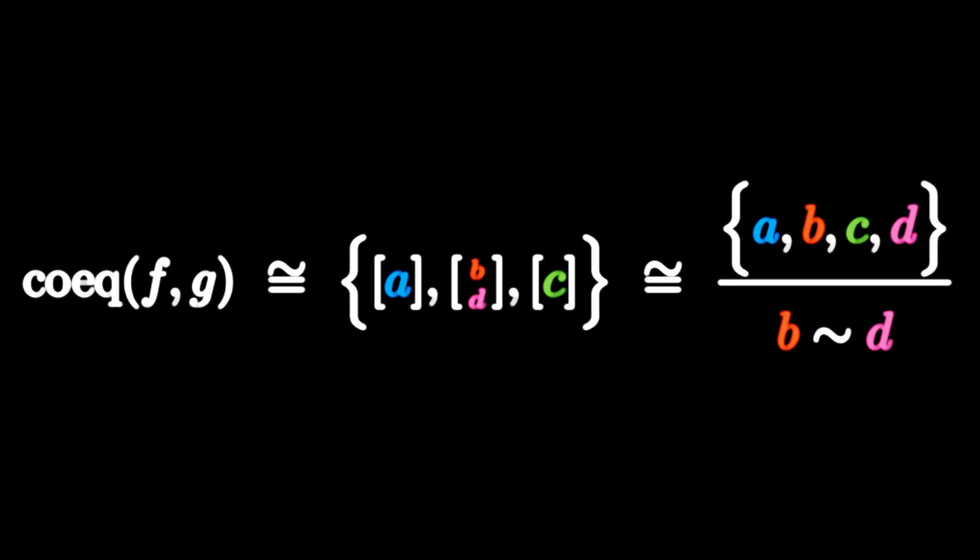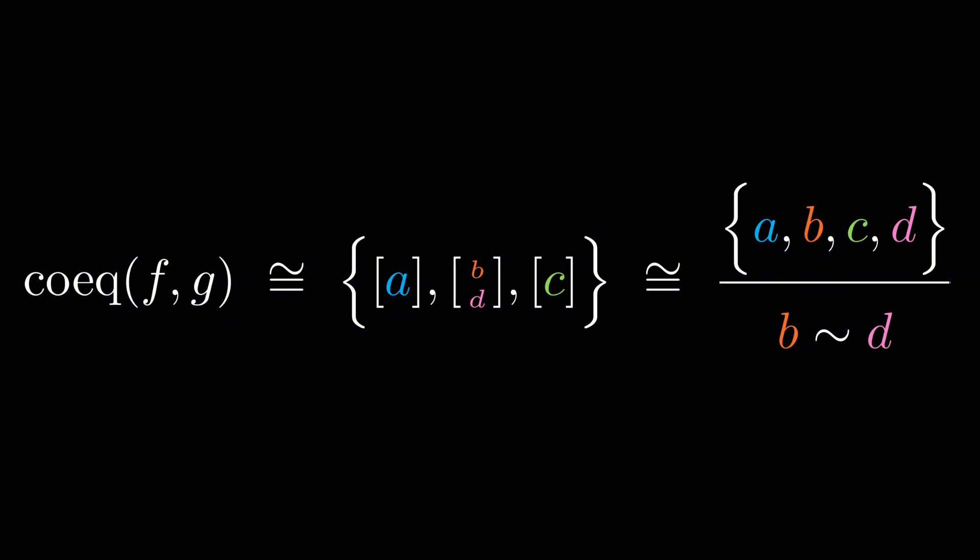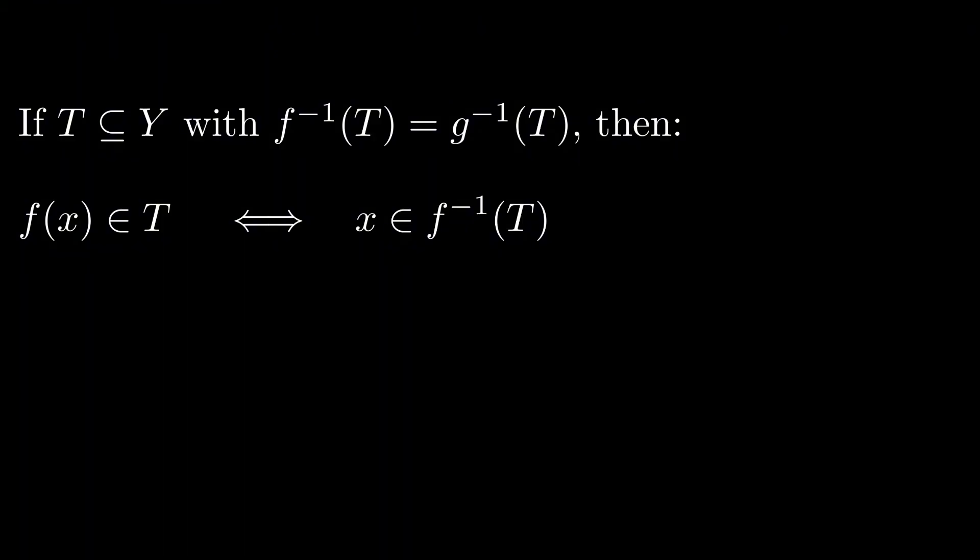Nonetheless, these subsets still serve to partition y into three disjoint pieces, and this kind of partitioning remains true for all coequalizers in general, at least in the category of sets. As a set, we can conceptually think of the coequalizer as the three-element set obtained by taking y and then gluing b and d together. The reason why b and d are glued together is because f of 2 is b and g of 2 is d. Indeed, if a subset t of y contains some f of x, then x is in the preimage of t under f.